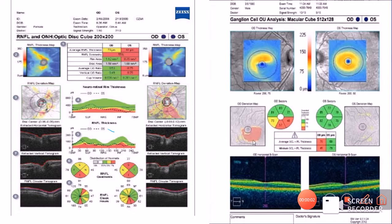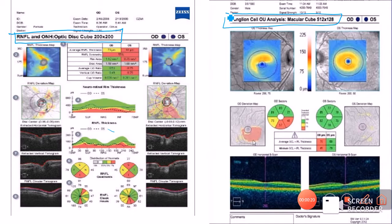Now after we have a basic understanding of the three testing protocols or the three types of analysis of OCT in glaucoma, these are the types of scans that we actually get. The first is the RNFL or the optic nerve head analysis protocol and the second is the macular cube or the macular protocol. Now let us see what are the components of the scan and how to read the scan very easily.